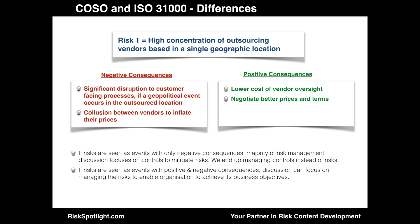So by analyzing positive and negative consequences, we are able to make decisions on whether to increase or decrease the level of risk exposure to facilitate our organization to achieve its strategy and objectives, which is at the heart of risk management. If risks are only seen as events with negative consequences, the majority of risk management discussion focuses on controls to mitigate such risks — risk managers and risk owners stop managing risks and instead become risk controllers. If risks are seen as events with both positive and negative consequences, then the discussion can focus on managing risks to enable the organization to achieve its business objectives.